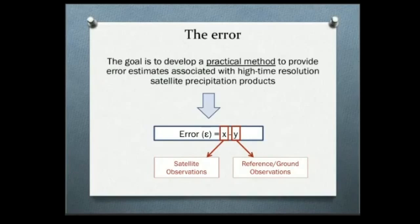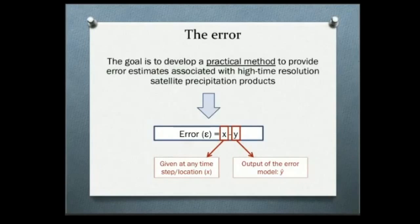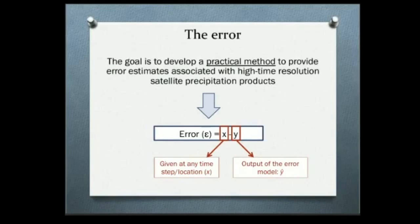Satellite observations are given at any time step and location. But the reference data — for example, we have ground observations over the U.S. — if we go to Kenya, Africa, do we have ground observations? No. So that's what my model will be estimating: that Y. If we have X and we estimate Y, then we can compute the error as the difference between the two. My model will give you Y, and from there you can compute your errors.